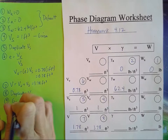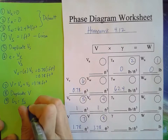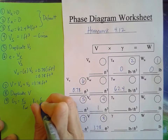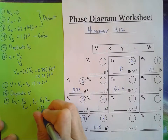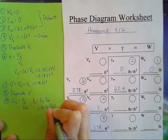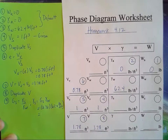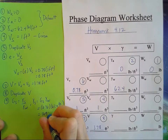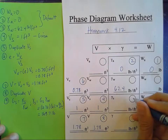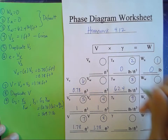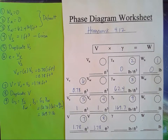The relationship is: specific gravity equals gamma solids over gamma water. Solving for gamma solids gives specific gravity times gamma water — that's 2.72 times 62.4 pounds per cubic foot — which equals 169.7 pounds per cubic foot. That's number nine.